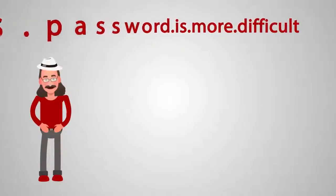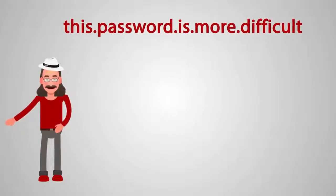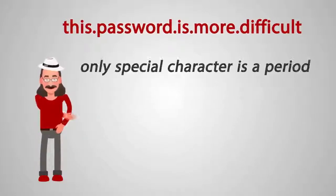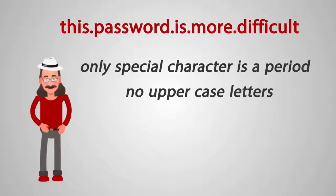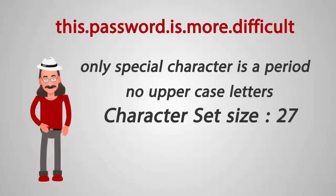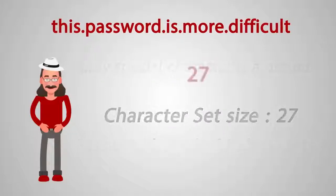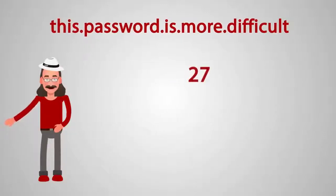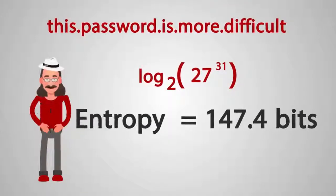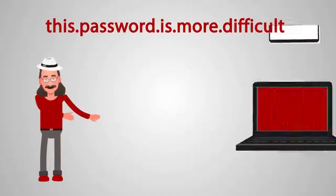Let's throw out our password composition rules and try a password that's a lot easier to remember. The only special character used was a period, and there are no uppercase letters, so the character set size is only 27 characters. Our password length is 31 characters long though, which means we're calculating the base-2 logarithm of 27 to the 31st power. This produces an entropy result of 147.4 bits, which is almost double the entropy of our previous password.